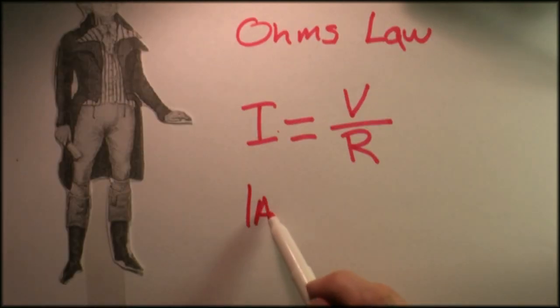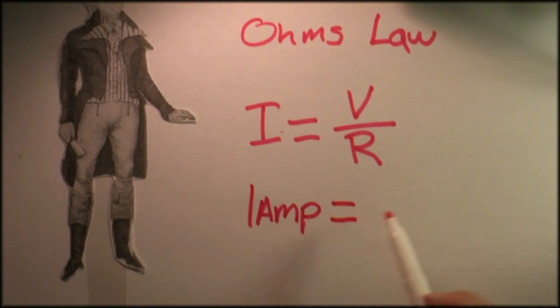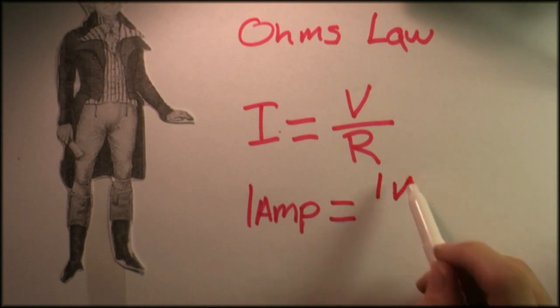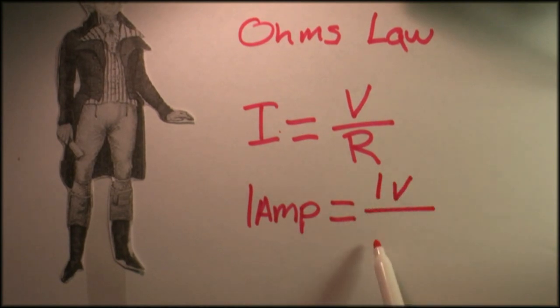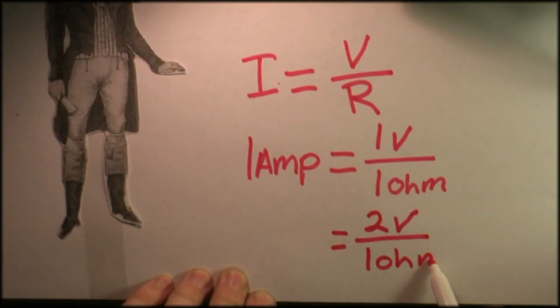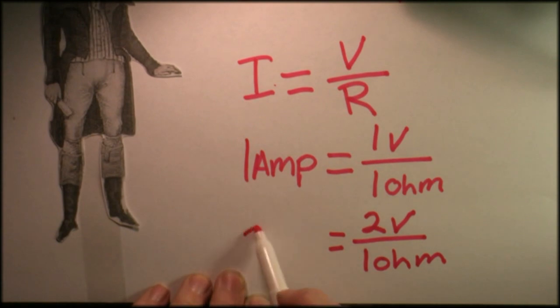If we're looking for one amp of current flow in our circuit, and we have a one volt battery, then our resistor needs to be a one ohm resistor. It's pretty simple math. One volt divided by one ohm equals one amp. If we double the voltage of the battery, it's easy to see that the current flow will be doubled in our circuit.